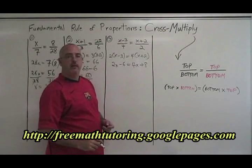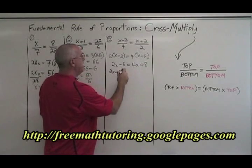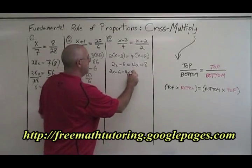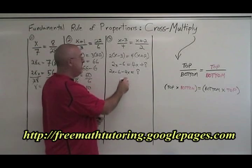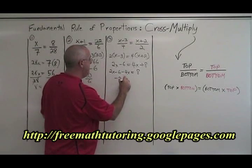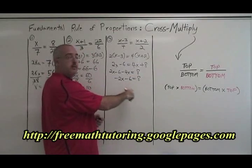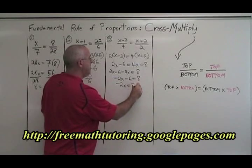Let's get all of our x's on the left side. We have 2x minus 6. Moving the 4x over, we get 2x minus 6 minus 4x equals 8. We can combine these x's. 2x minus 4x is negative 2x minus 6 equals 8. Moving the 6 to the other side, negative 2x equals 8 plus 6.